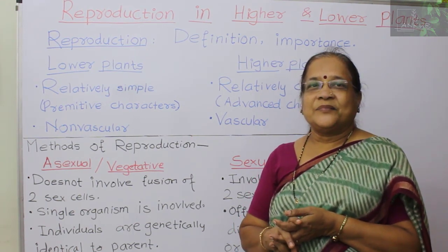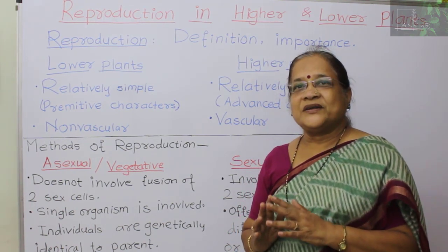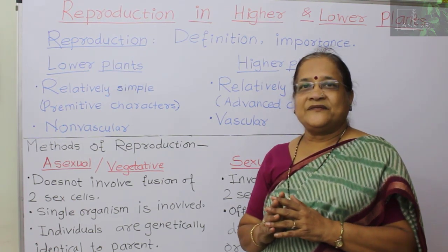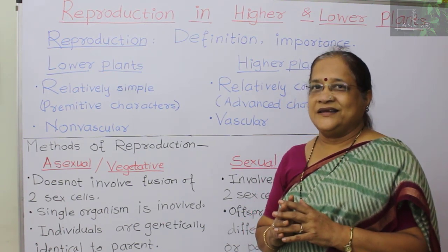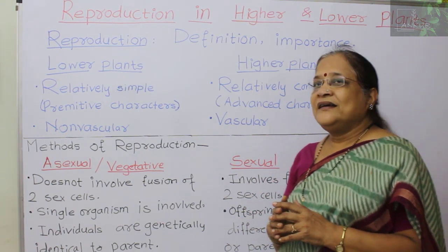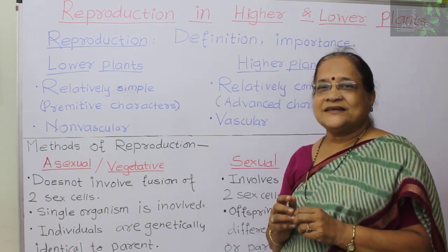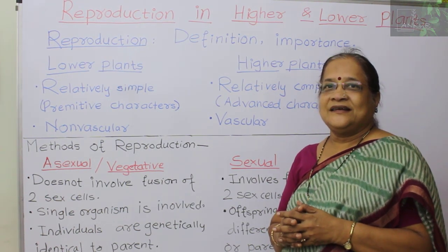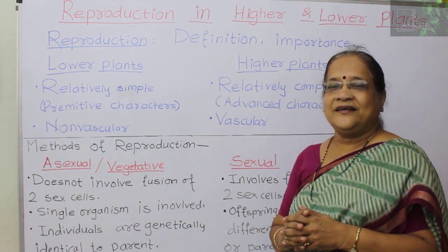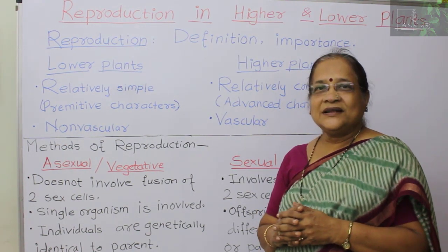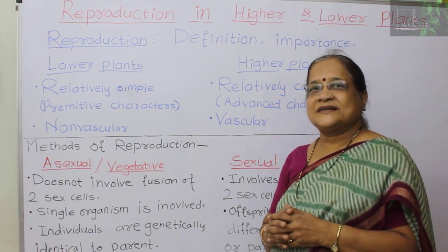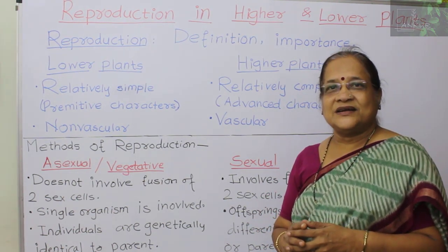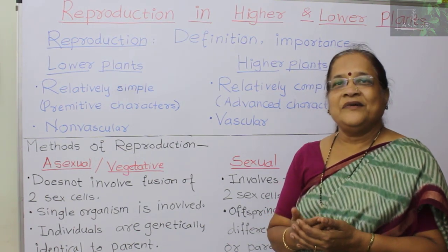That is the perpetuation and multiplication of that particular plant species. Now, the difference between lower plants and higher plants: lower plants are relatively simple and show primitive characters as seen in the first lecture. Examples include algae, fungi, and bryophytes — these plants are non-vascular, meaning they do not have vascular tissue such as xylem and phloem.